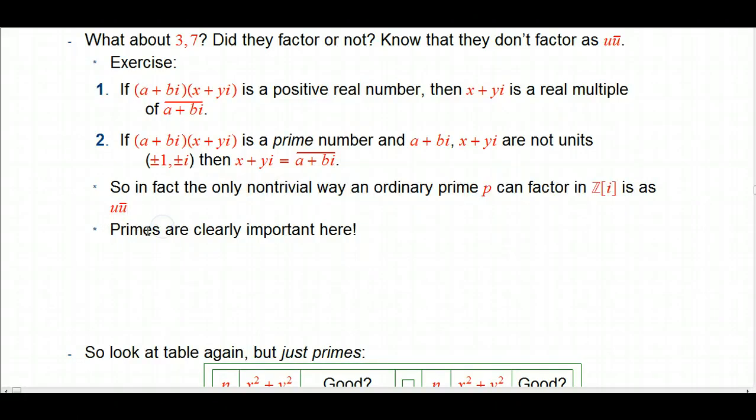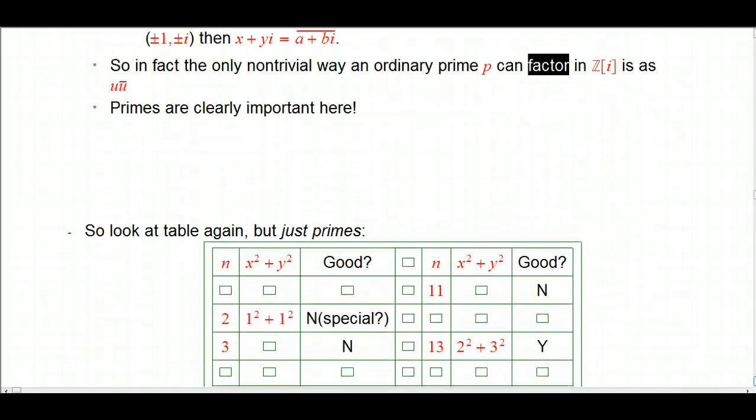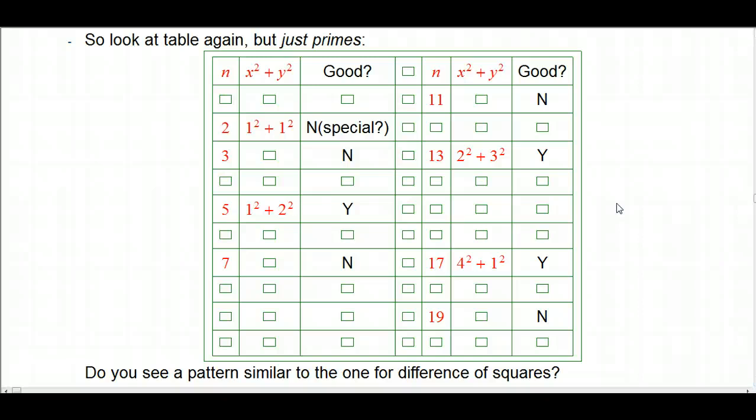Again, we're seeing some payoff from this simplification already of looking at primes. And it's really, really interesting about these words primes and factorizing, factorization. That's what we seem to be led to, is understanding that better in the Gaussian integers. So we still didn't have a good guess from our table before as to which numbers can be expressed as the sum of 2 squares. But let's just look at the primes now.